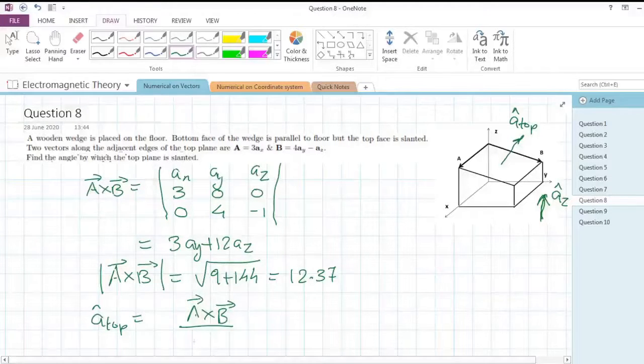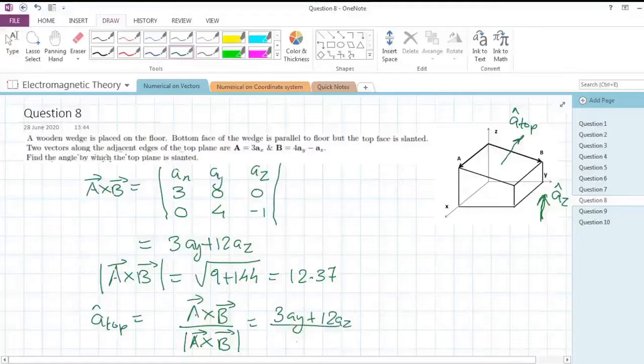To find this unit vector emerging from the top, what we can do is divide the vector by its magnitude. So we will get (3ay + 12az) / 12.37, which can be written as 0.243ay + 0.97az.